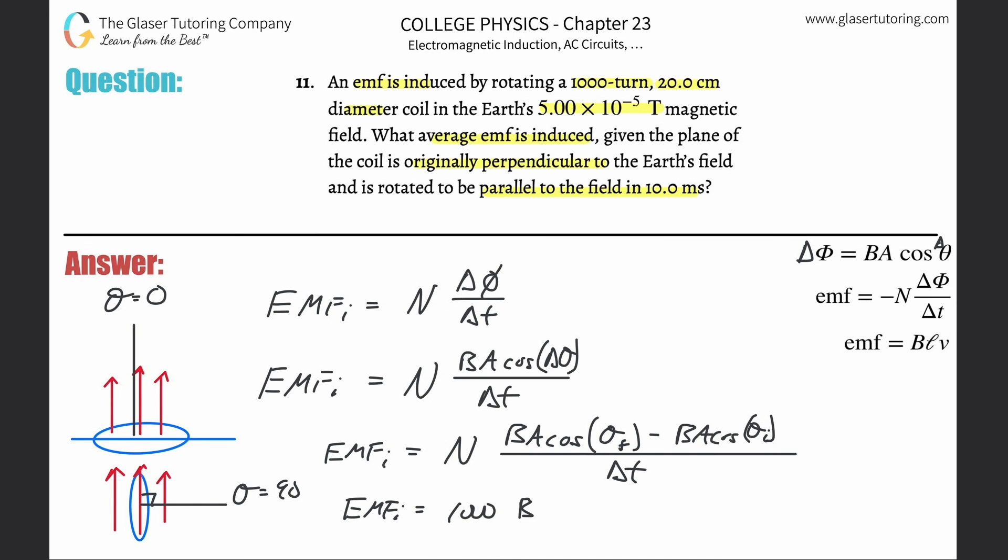So what we're going to realize here is that this is going to be then 5 times 10 to the minus 5th times the area. Well, they told me the diameter, and they told it to me in centimeters. So you know that that represents 0.2 centimeters. Oh, what am I talking about? 20 centimeters is 0.2 meters.